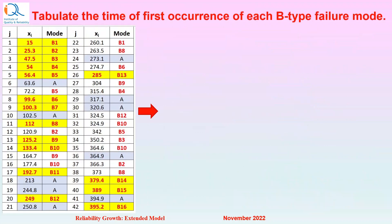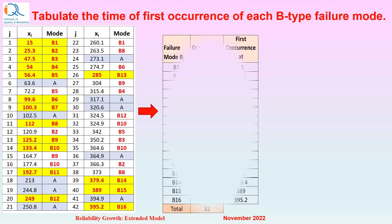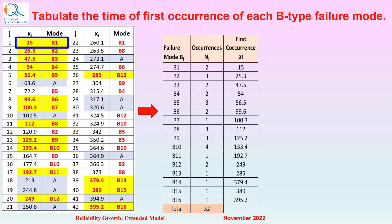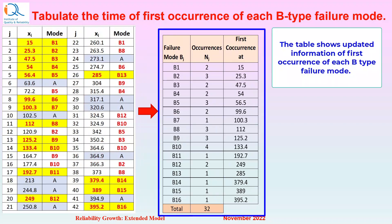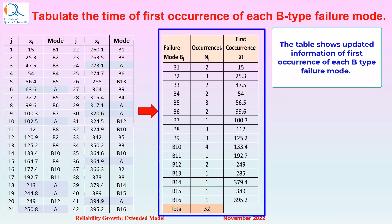Now we need to tabulate the time of first occurrence of each of the B-type failure modes. Looking at the table, we can note that B1 occurred for the first time at 15 hours, B2 at 25.3, and so on. B16, the last failure mode, occurred for the first time at 395.2 hours. The table shows the updated information of the first occurrence of each of the failure modes.